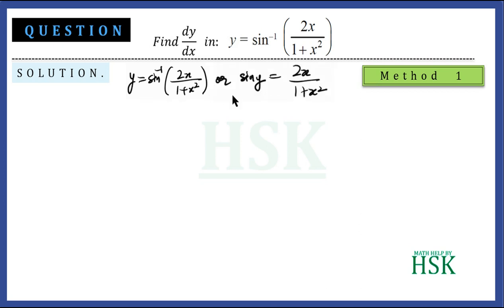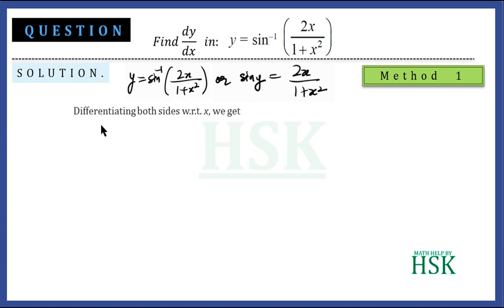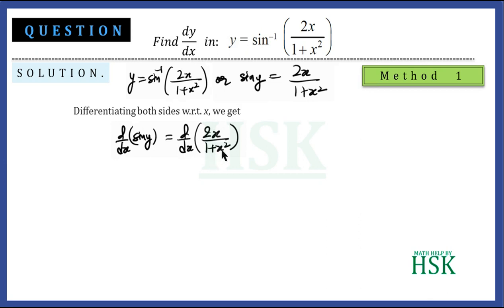If we write this as sin y = 2x/(1+x²), the problem becomes much simpler, because now we only have to differentiate 2x/(1+x²) and sin y can be differentiated very easily. Differentiating both sides with respect to x, we get d/dx(sin y) = d/dx(2x/(1+x²)).